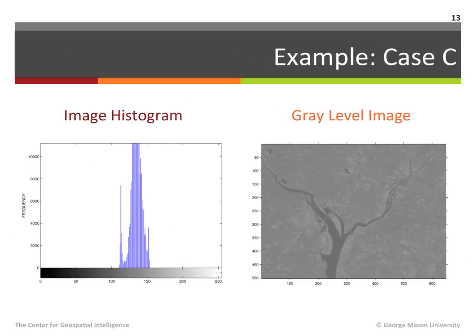In case C, the image histogram on the left is concentrated in the middle of the dynamic range of the image, however it is very narrow. As a result, the image on the right is not too bright and not too dark, however it does exhibit poor contrast.